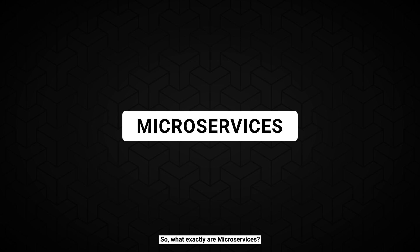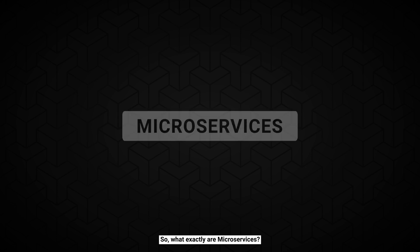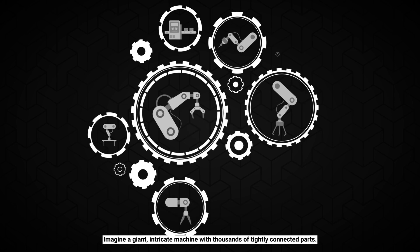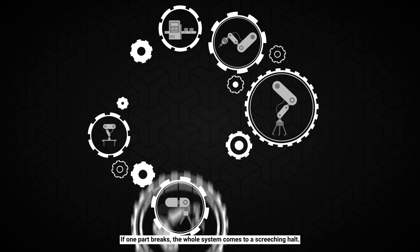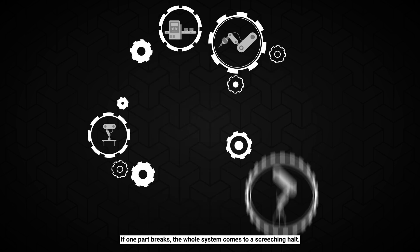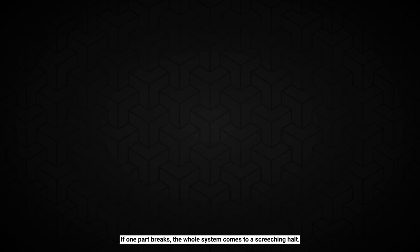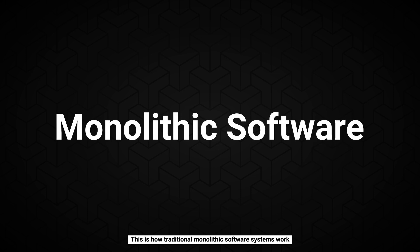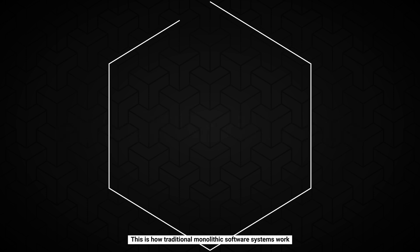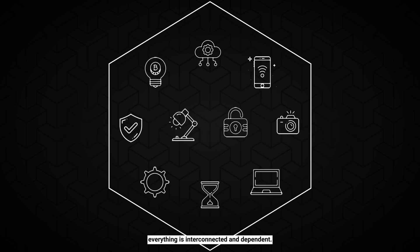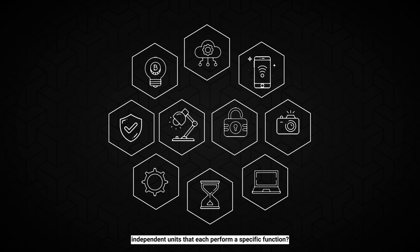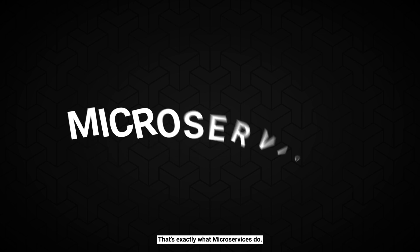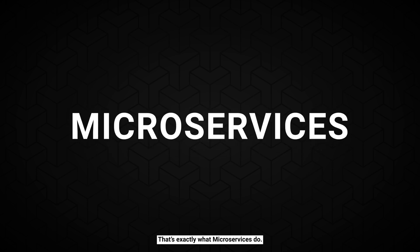What exactly are microservices? Imagine a giant, intricate machine with thousands of tightly connected parts. If one part breaks, the whole system comes to a screeching halt. This is how traditional monolithic software systems work — everything is interconnected and interdependent. But what if we could break that machine into smaller, independent units that each perform a specific function? That's exactly what microservices do.